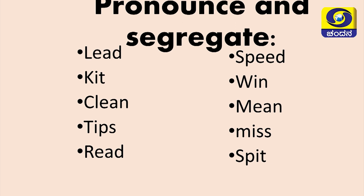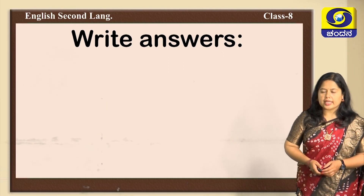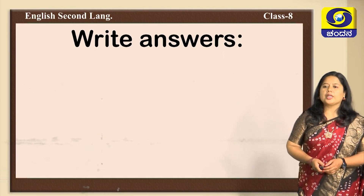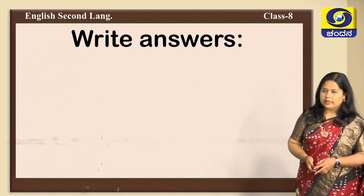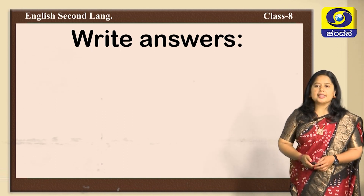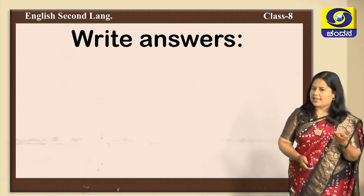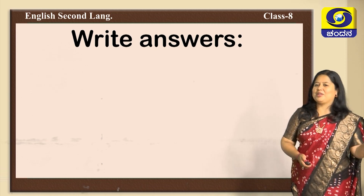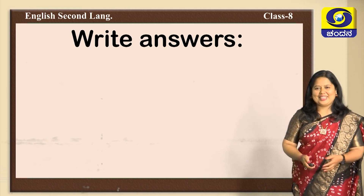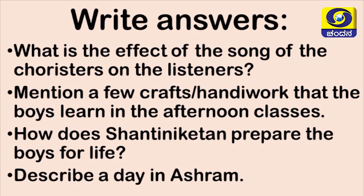After studying the whole lesson, here is one more activity for you with short and long vowels. Pronounce and segregate the following words: lead, kit, clean, tips, read, speed, win, mean, miss, and spit. Write these words down and segregate them into two parts — short vowels and long vowels. There are also more questions on the text so you can understand the lesson better. Find answers from the text and submit to your teacher.